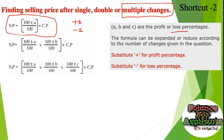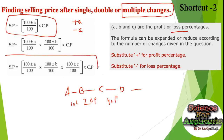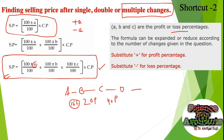For multiple changes in a product's price — for example, product A has 10% loss, B has 20% profit, C has 40% profit — if there are multiple transactions and you have the selling price, we use formula number 3. Here A represents the profit or loss in the first transaction, B is the second transaction, and so on depending on how many transactions are involved.